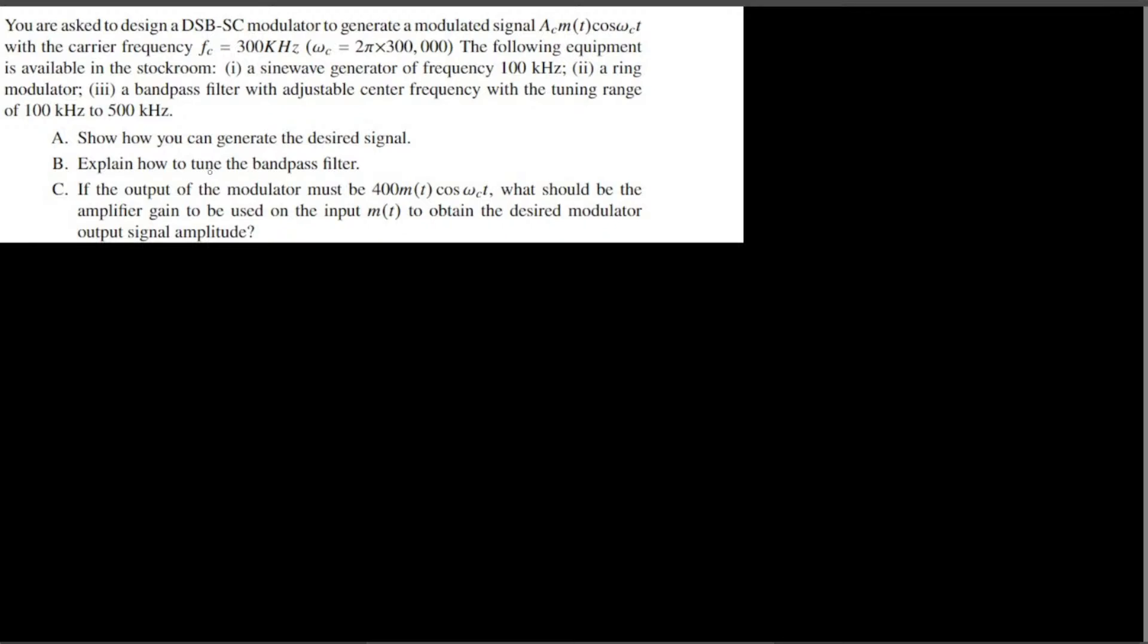Part B asks how to tune the bandpass filter. Part C asks, if the output of the modulator is 400cos(ωct), what should be the amplifier gain?